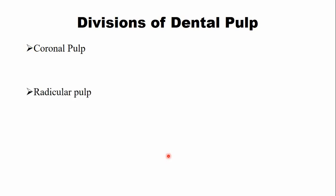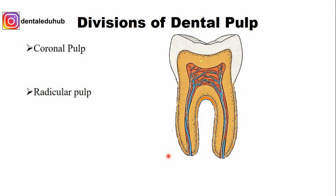One is the coronal pulp — the part of the dental pulp that is present within the crown of the tooth — and the second part is the radicular pulp, which is the part of the dental pulp present in the root of the tooth. This is a picture of the longitudinal section of a molar. Above the cementoenamel junction this is enamel and this is cementum. Above this cementoenamel junction is the coronal pulp, and in the root this portion of the dental pulp is the radicular pulp.